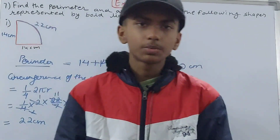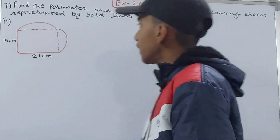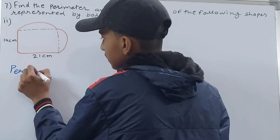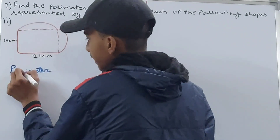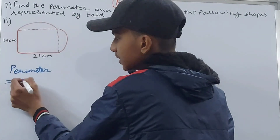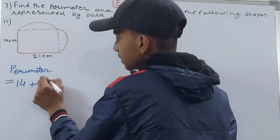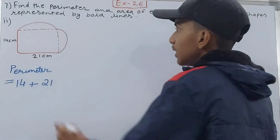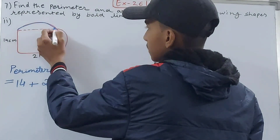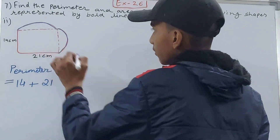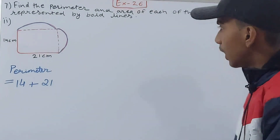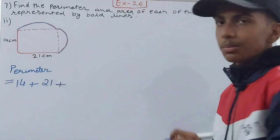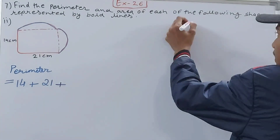Now moving to the next part. We have a new figure and we will calculate its perimeter first. The perimeter includes the 14 cm side and the 21 cm side, plus the boundary of the two semicircles. We calculate the circumference of each semicircle.